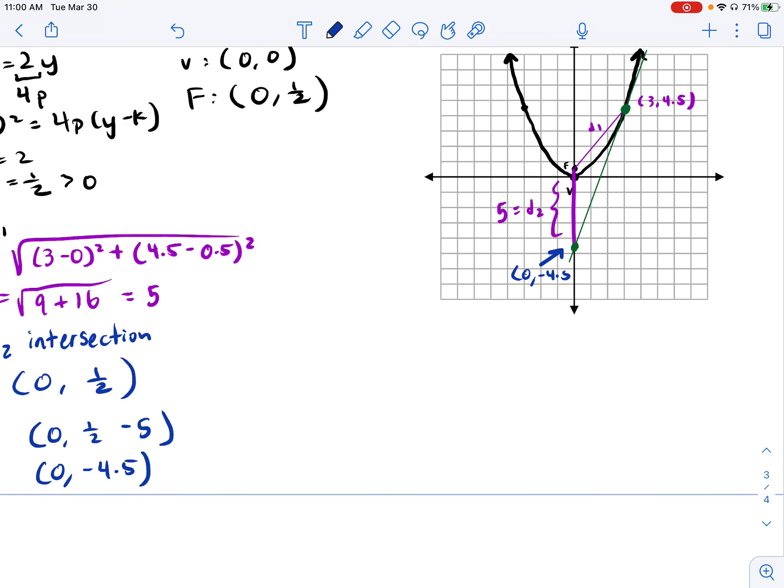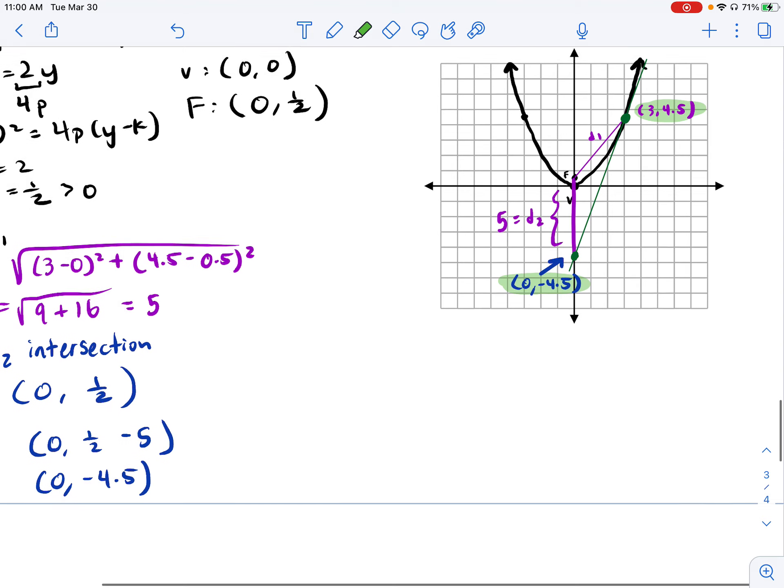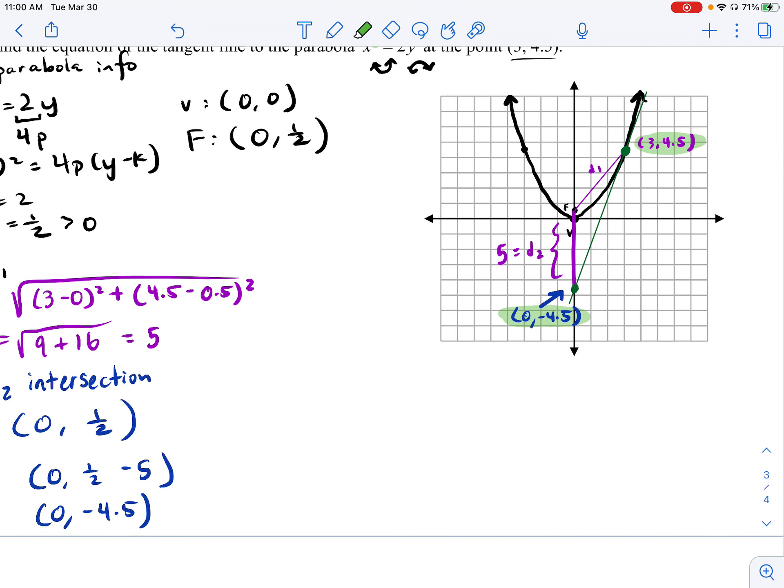So this point here is (0, -4.5). So I've got two points now on my tangent line. I've got the original point of tangency as it was given, and I've got the point where the tangent line intersects the axis of symmetry, which was D1 or D2 units away down from the focus here in this particular case.